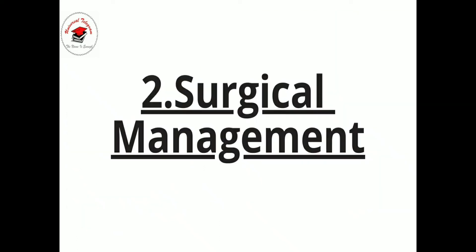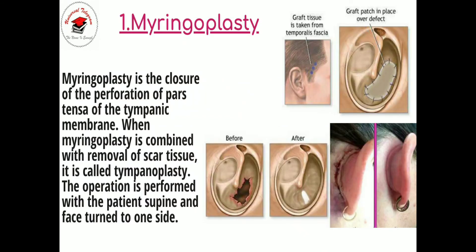The main surgical management: the first procedure is myringoplasty. As you can see in the picture, myringoplasty is the closure of the perforation of the pars tensa of the tympanic membrane. When myringoplasty is combined with removal of scar tissue, it is called tympanoplasty. The operation is performed with the patient supine and face turned to one side.